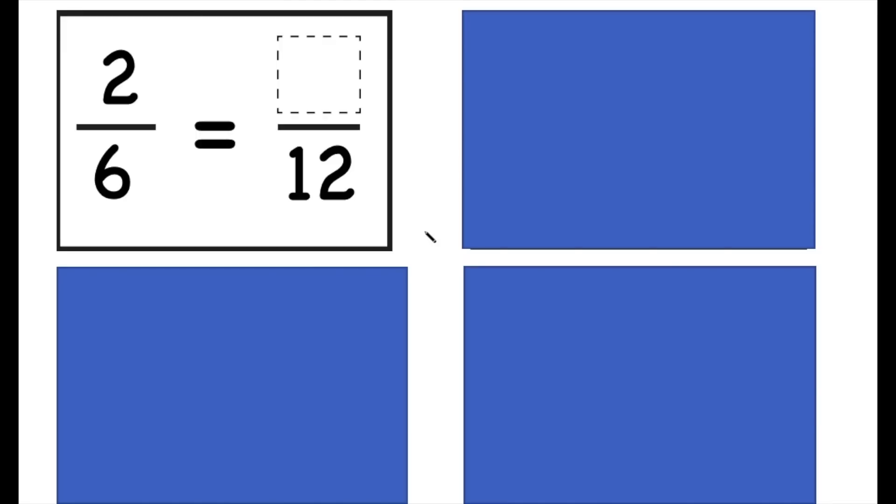So in today's mini lesson, we talked again about equivalent fractions and using our multiplication and division facts to be able to find equivalent fractions. One way that we talked about that was looking at multiplying when necessary.